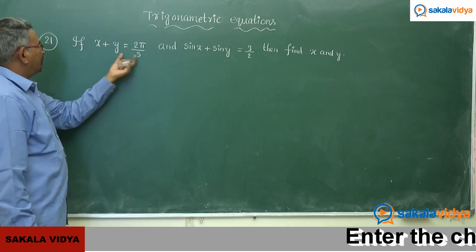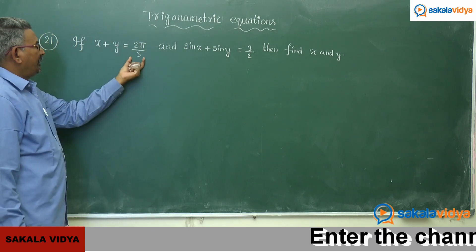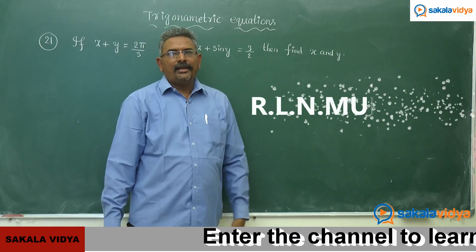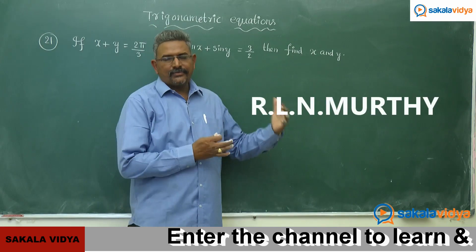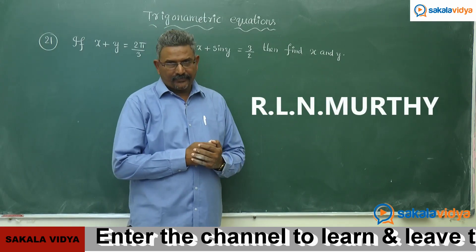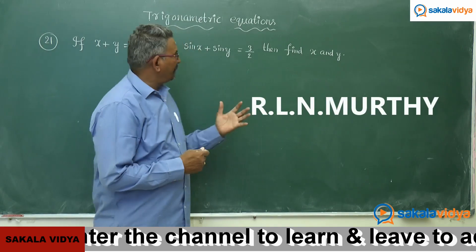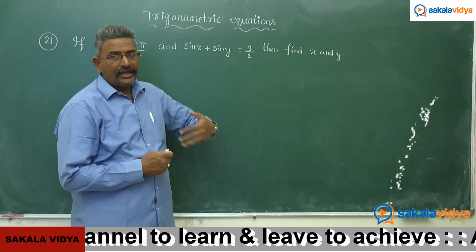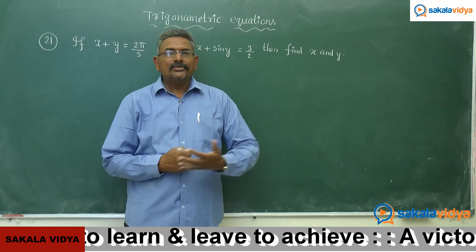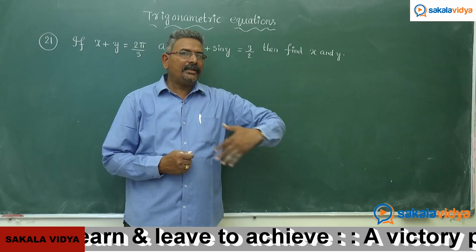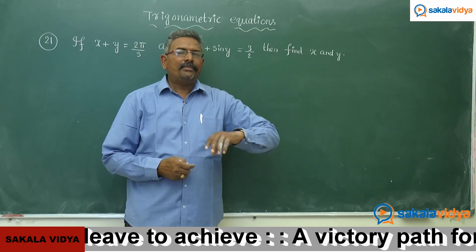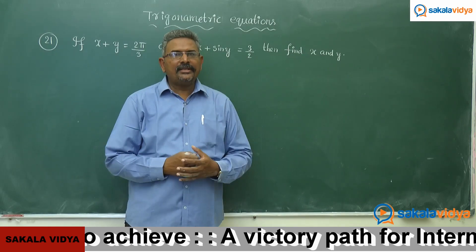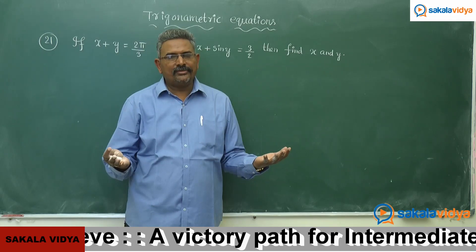Given that x plus y is equal to 2π/3 and sin x plus sin y is equal to √3/2, we are asked to find x and y. Since we already have the x plus y value, if we find x minus y, we can solve the two linear equations to easily get x and y values.